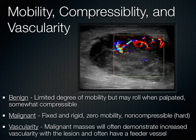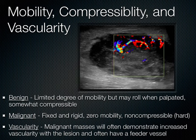Other distinguishing features include mobility, compressibility, and vascularity. Benign lesions have a limited degree of mobility but can roll when palpated, and they're somewhat compressible. Malignant lesions, however, are fixed, rigid, don't move at all, and are non-compressible and hard. With vascularity on color flow Doppler, malignant masses show increased vascularity within the lesion, and sometimes you can even see a feeder vessel penetrating deep into the structure.